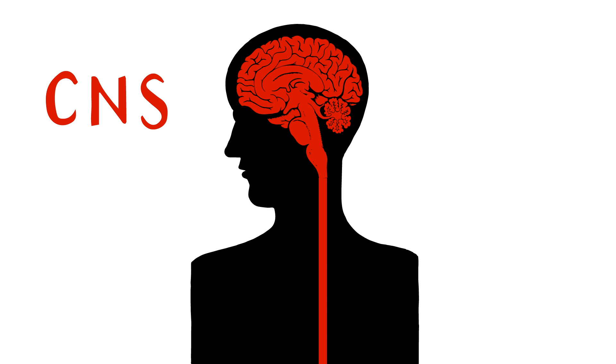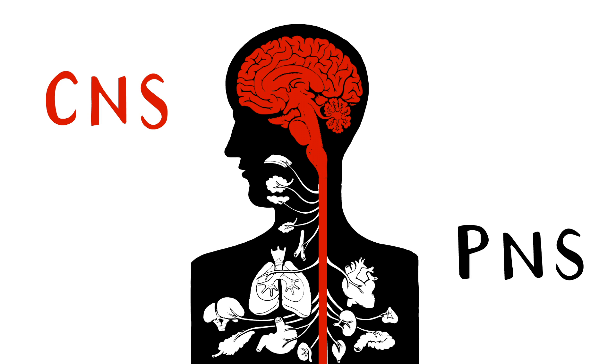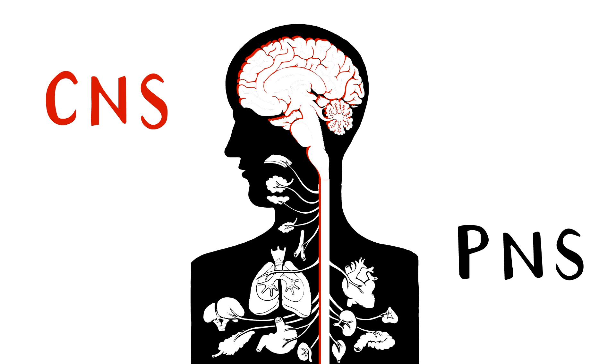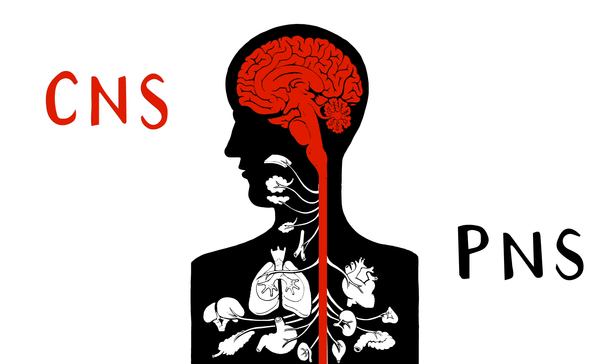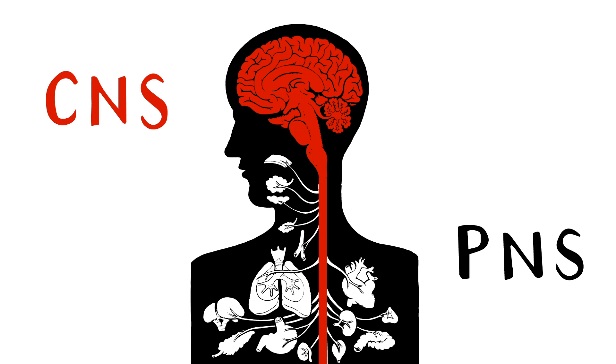The second great division is the peripheral nervous system, or PNS. The brain sends messages via the spinal cord to the peripheral nerves throughout the body that control our skeletal muscles and our internal organs.